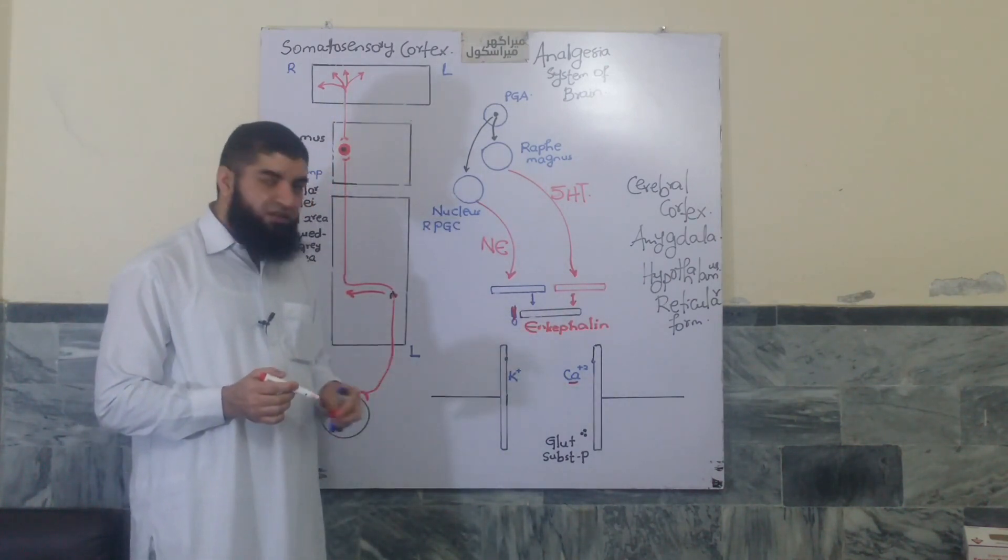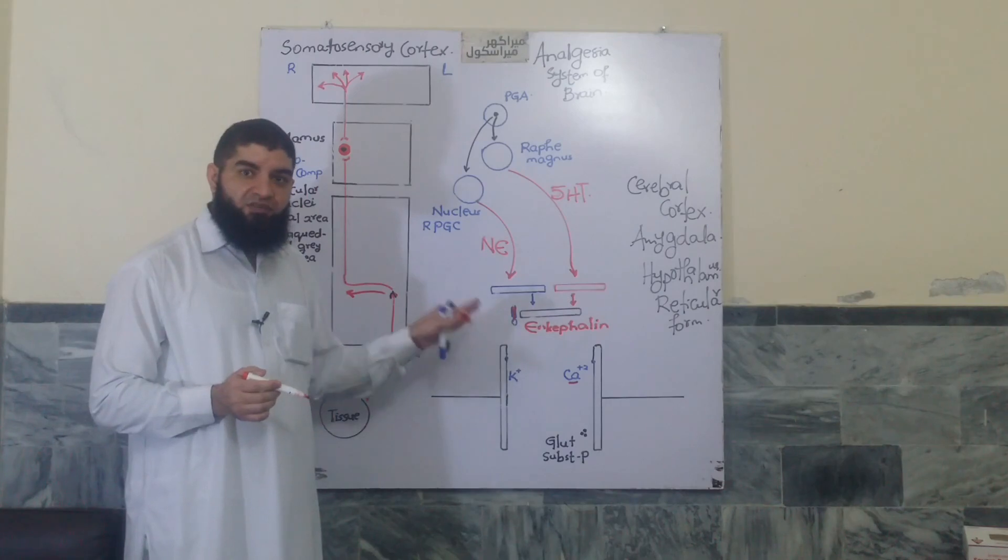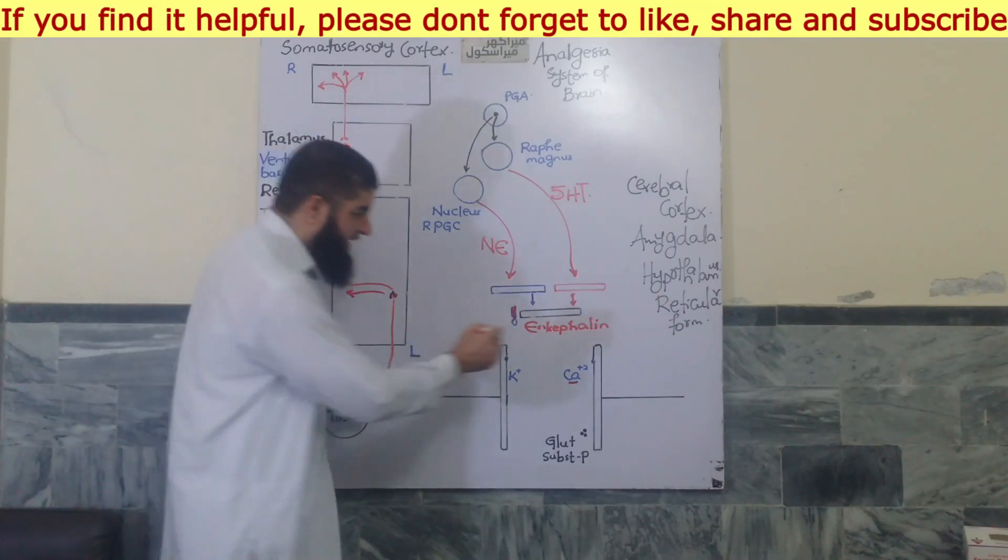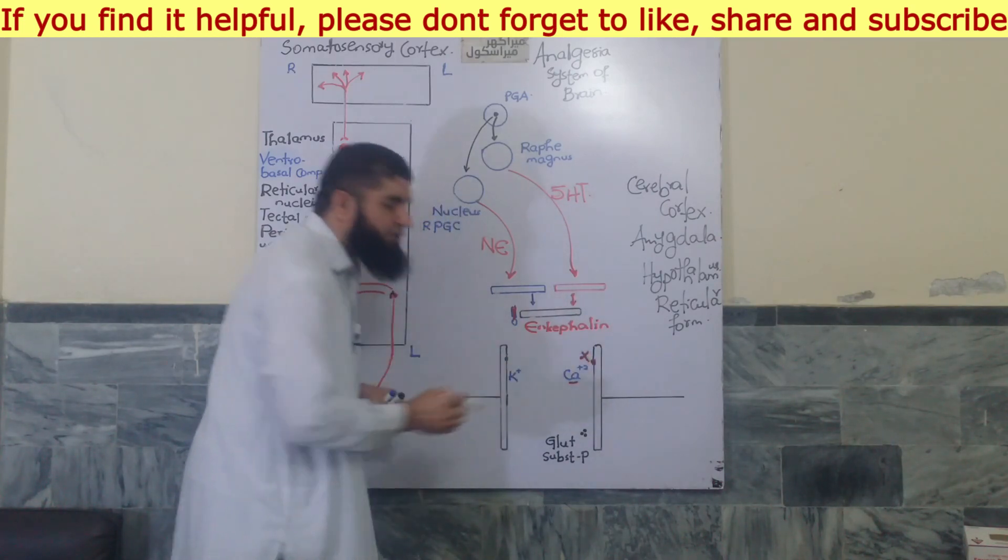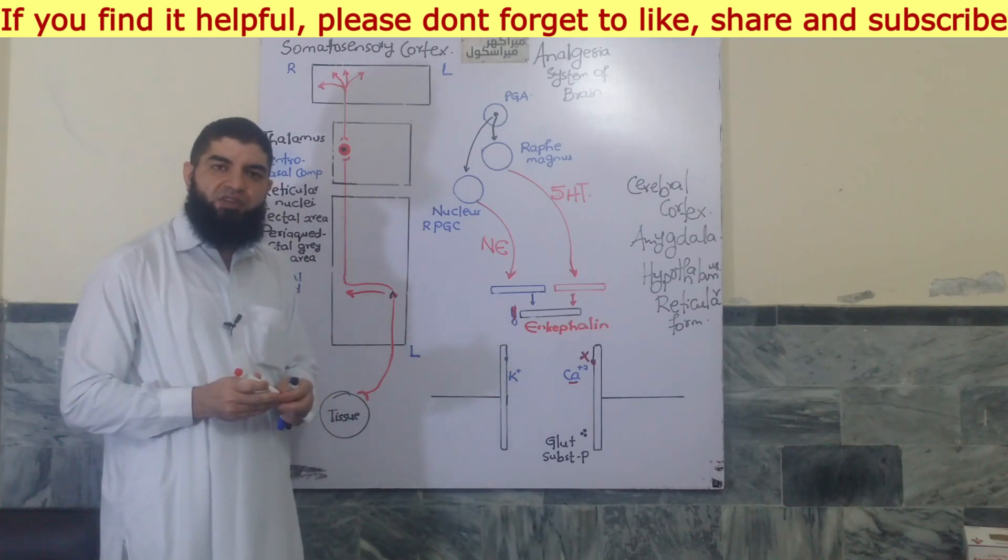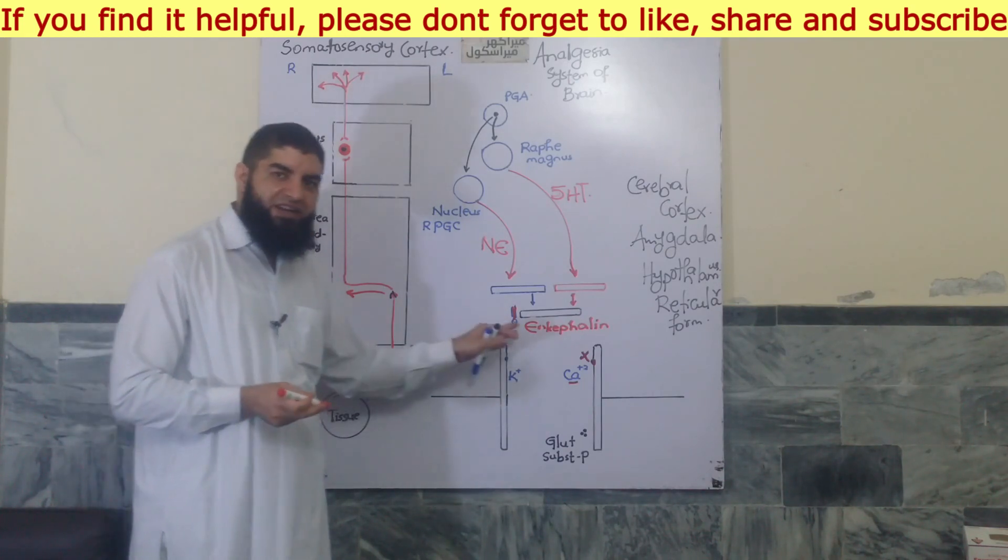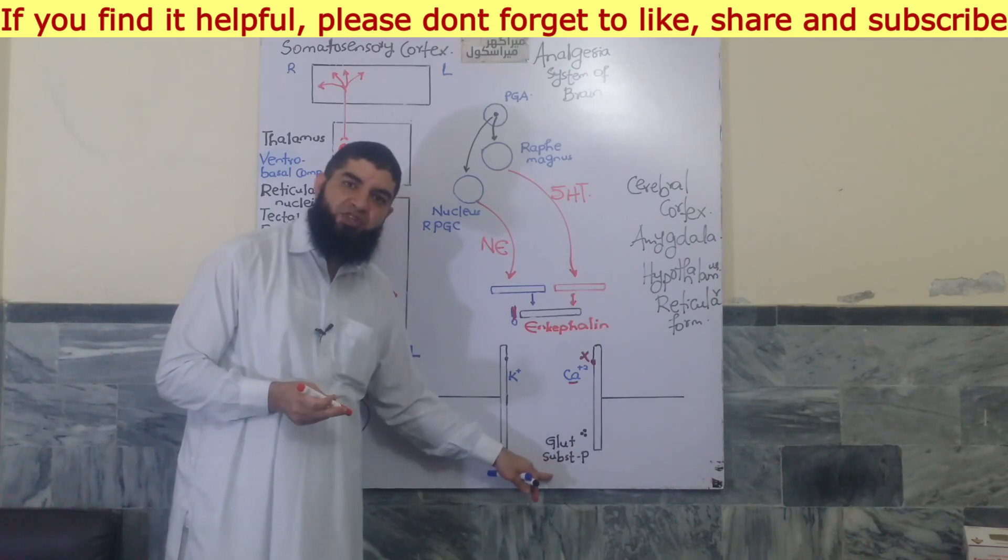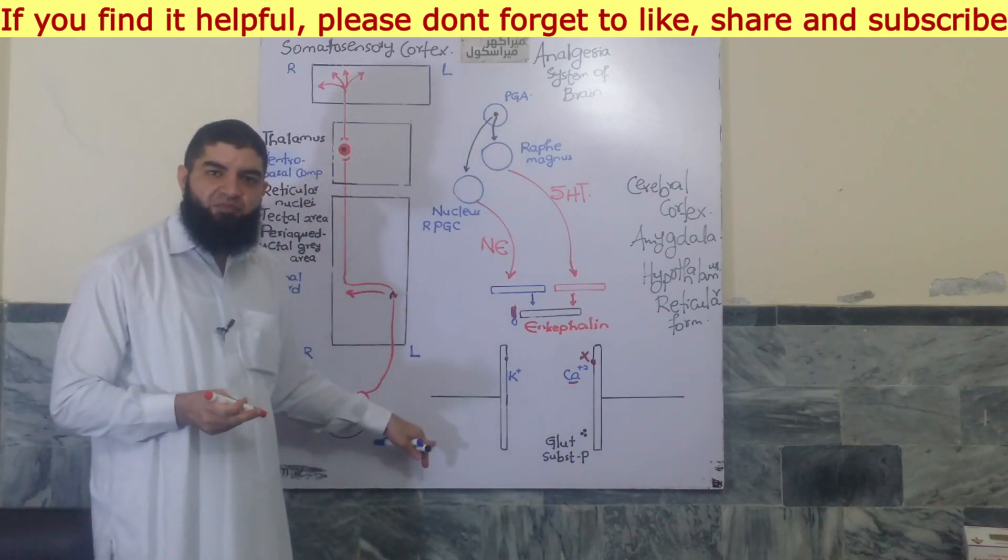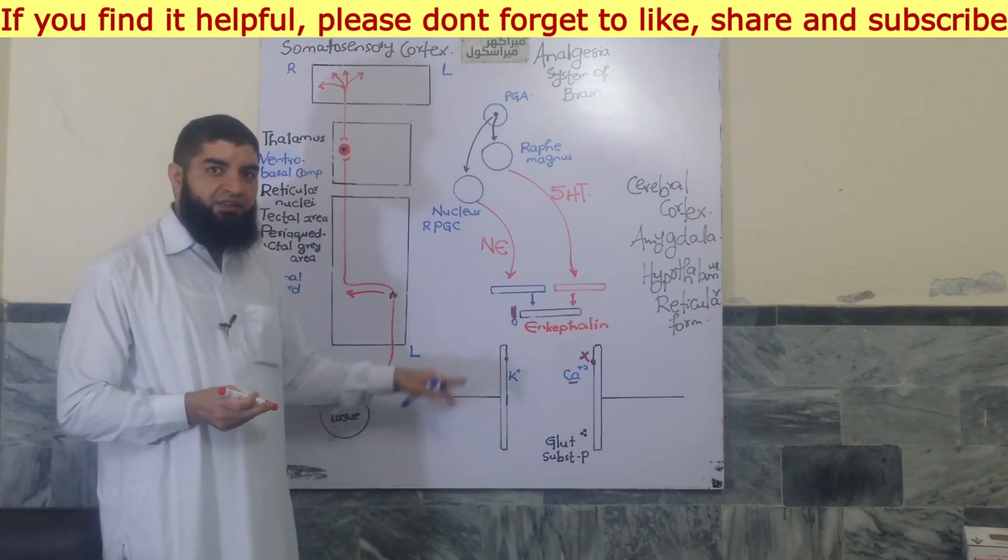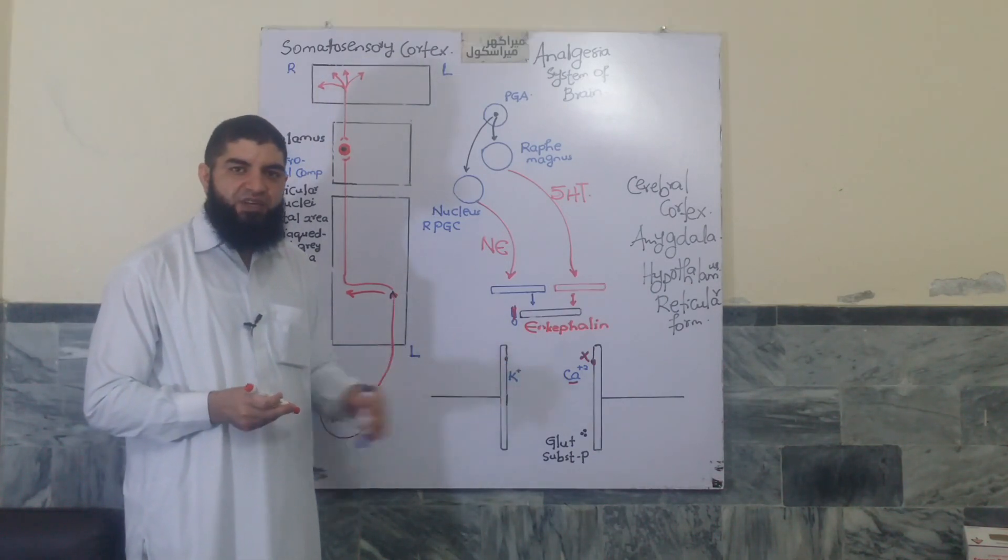Enkephalin binds to its receptors, opioid receptors in the pre-synaptic membrane here, and causes the blockade of calcium release in the pre-synaptic neuron. Now, blockade of calcium release causes the blockade of release of glutamate or substance P so that the post-synaptic neuron cannot be depolarized. This is how it causes pre-synaptic inhibition.